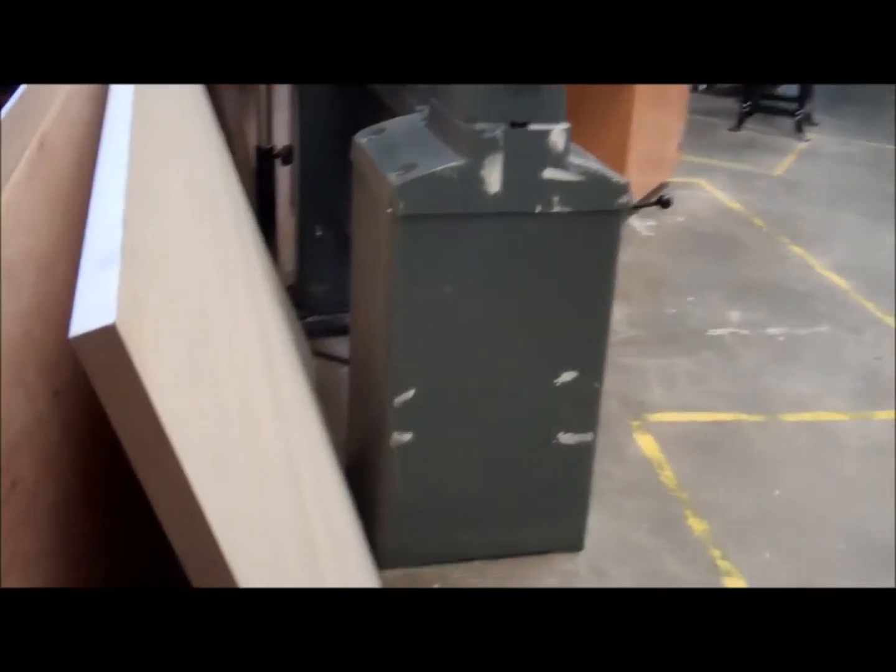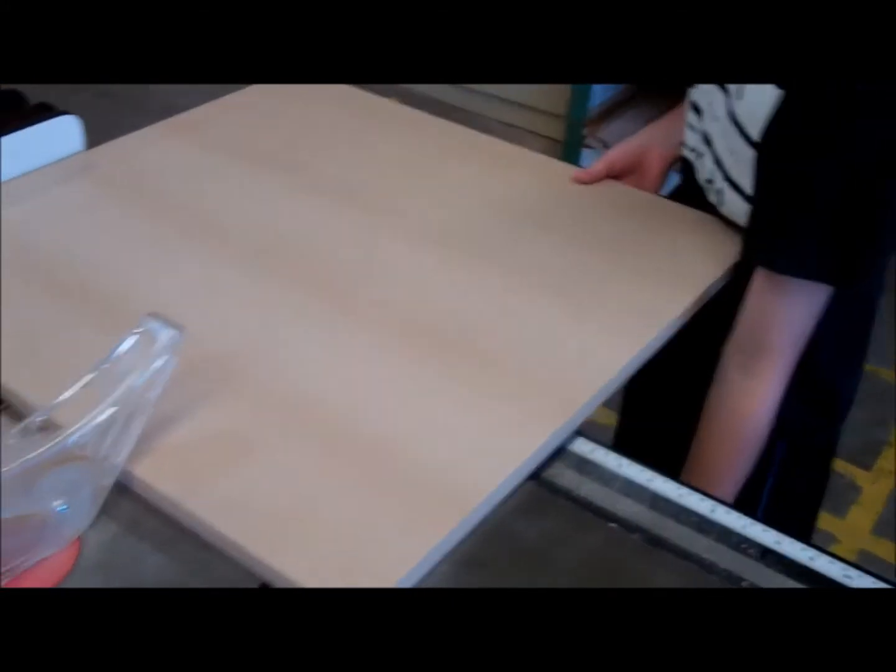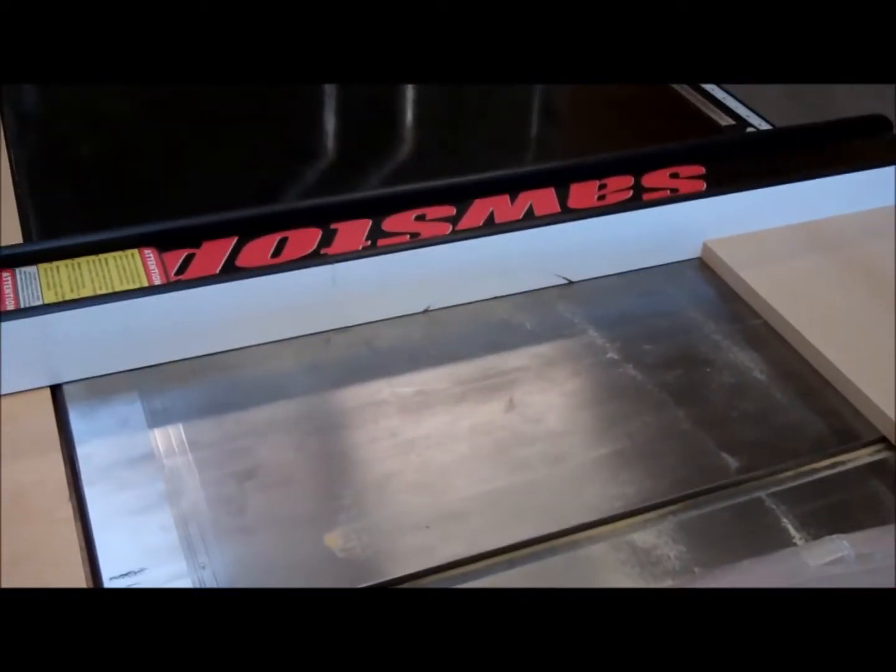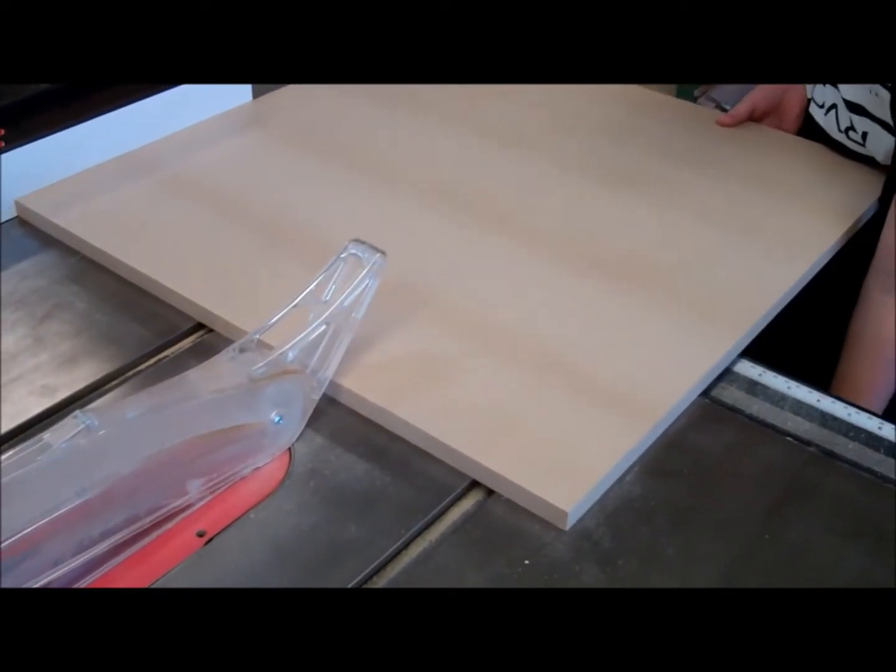Alright, next step is cutting the wood. Alright, now we are going to use the table saw, the saw stop. Go ahead and rip the MDF down to width.